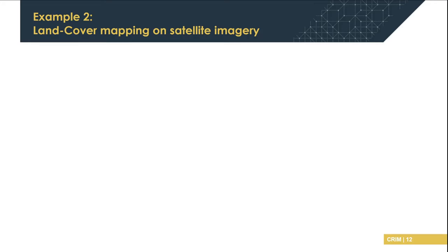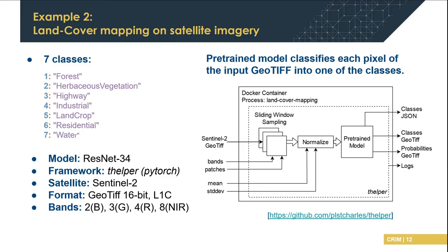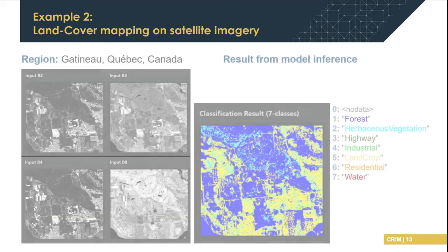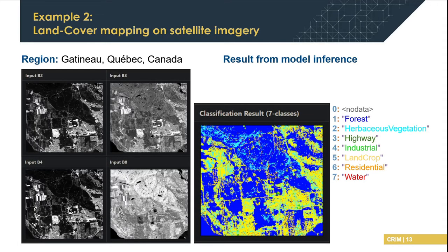The second example is another model trained for land-cover mapping over Sentinel-2 satellite imagery. It takes as input an image with multiple bands, which need to be specified with number of patches and normalization parameters, to produce classification results over seven classes. Once it processes the whole image, each pixel is classified with one of the seven classes. The whole sampling and classification procedure was packaged with Docker so that the environment can be replicated over different locations, producing a classified image from the model inference.